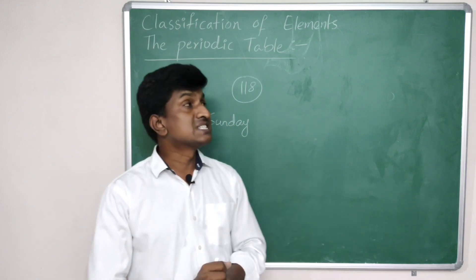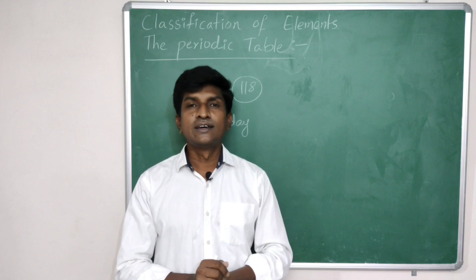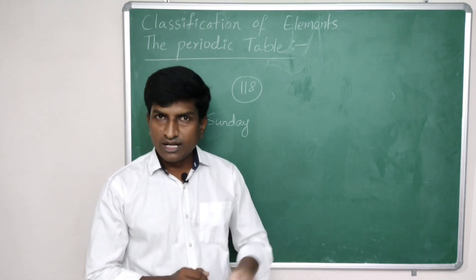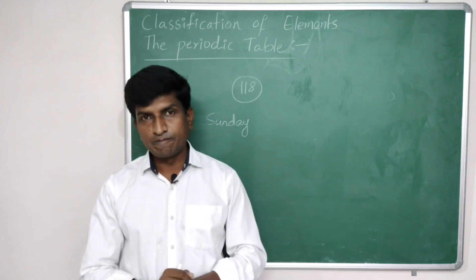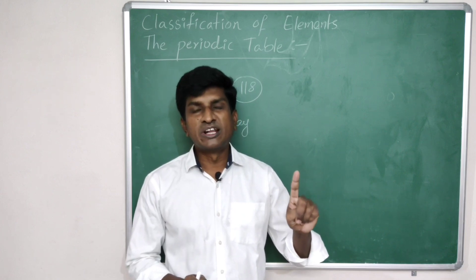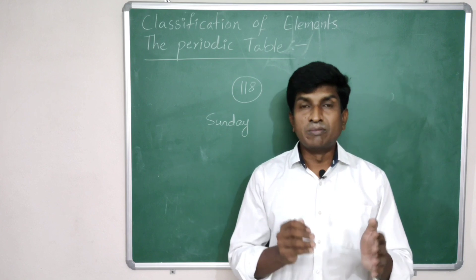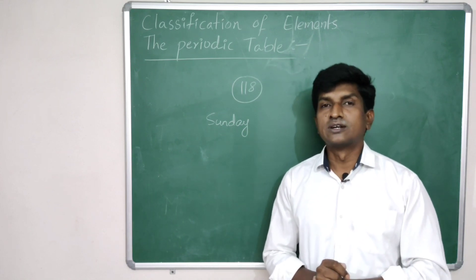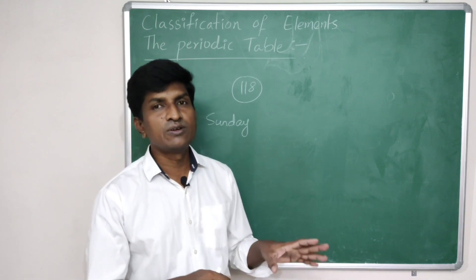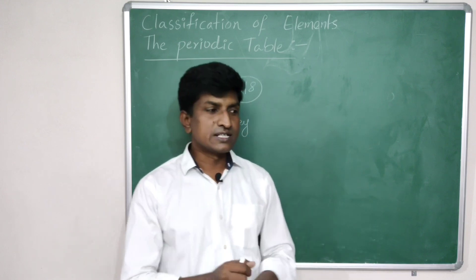Similarly, based on the properties of elements, we classify them. The fundamental property used is atomic weight — or more precisely, atomic number. There are four major classifications: Dobereiner's triads, John Newlands' octaves, Mendeleev's periodic table, and the modern periodic table given by Mosley. In this video we will mainly discuss Dobereiner's triads and Newlands' octaves.